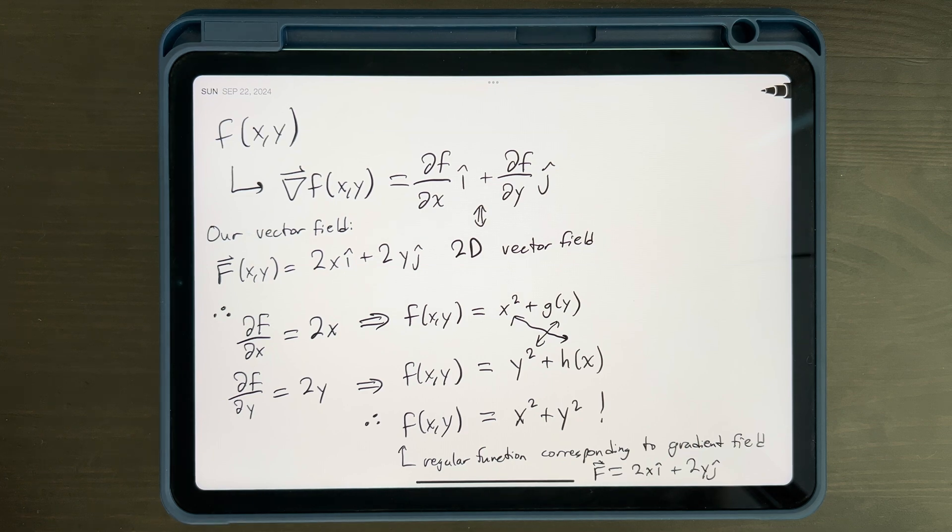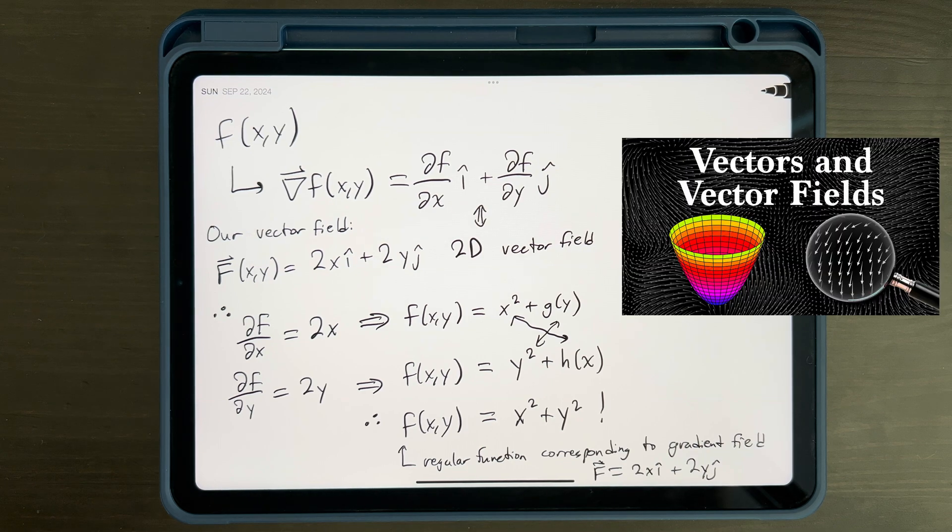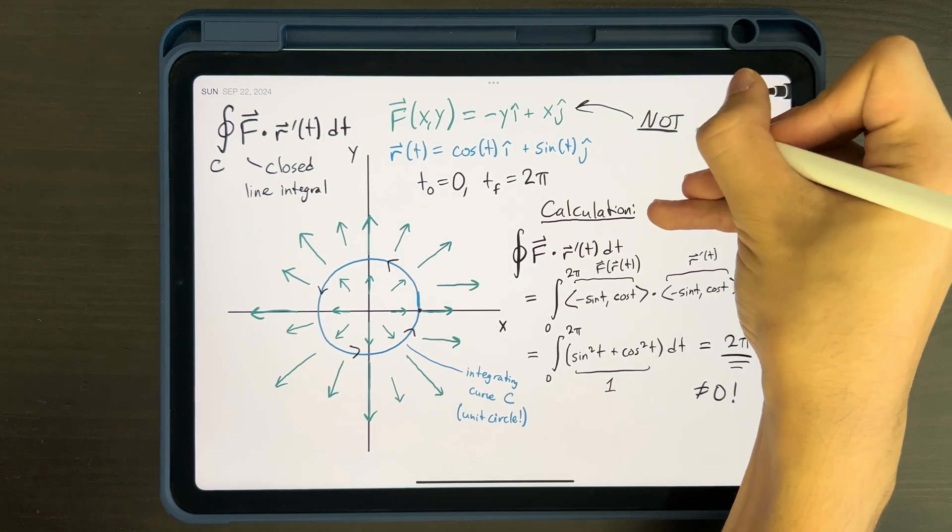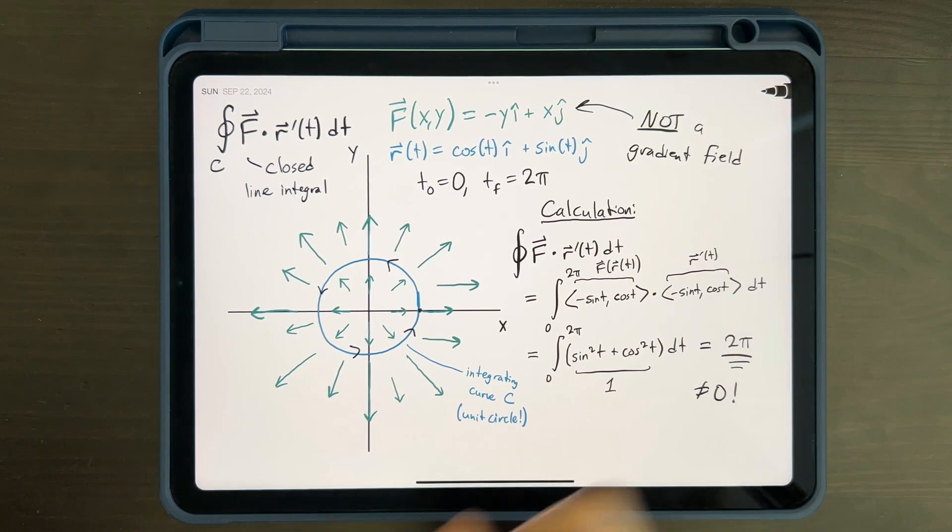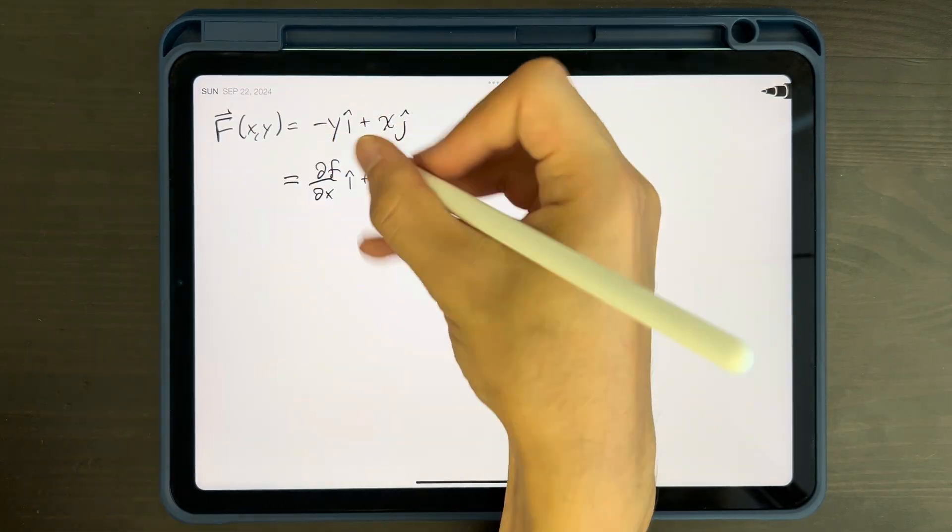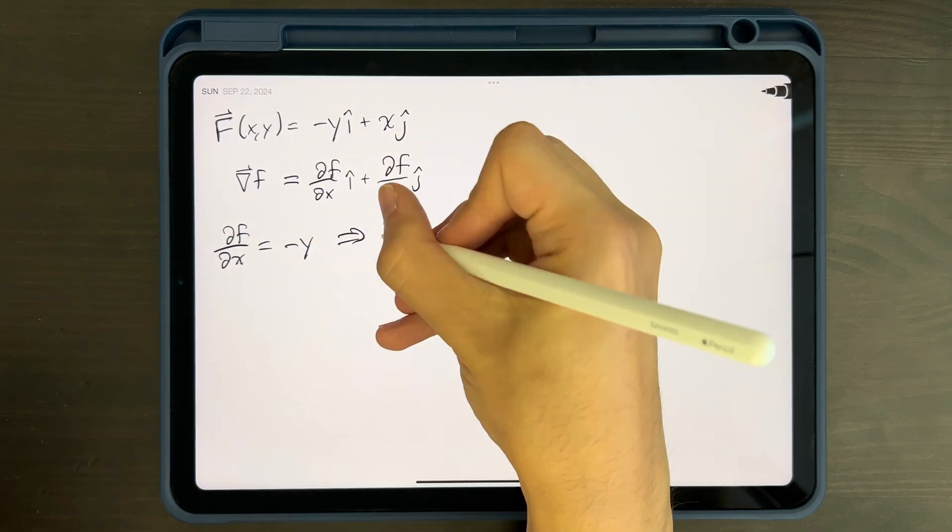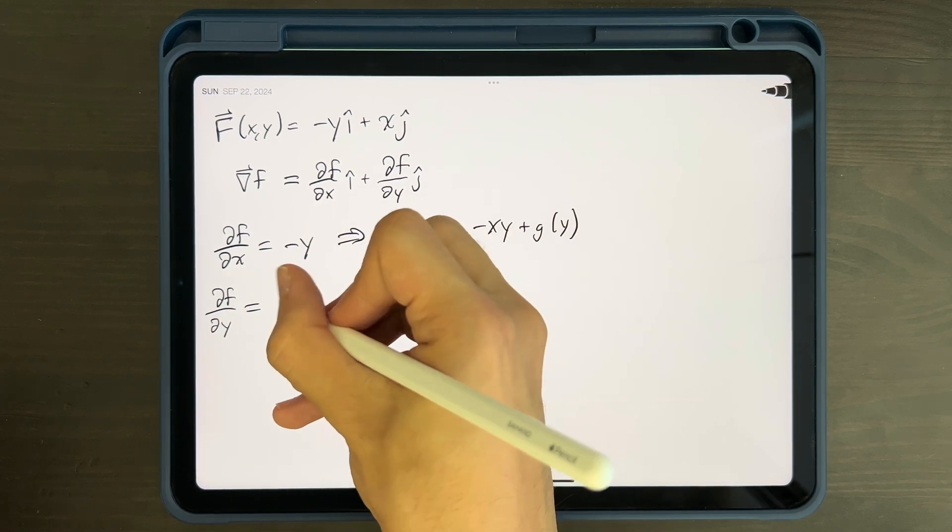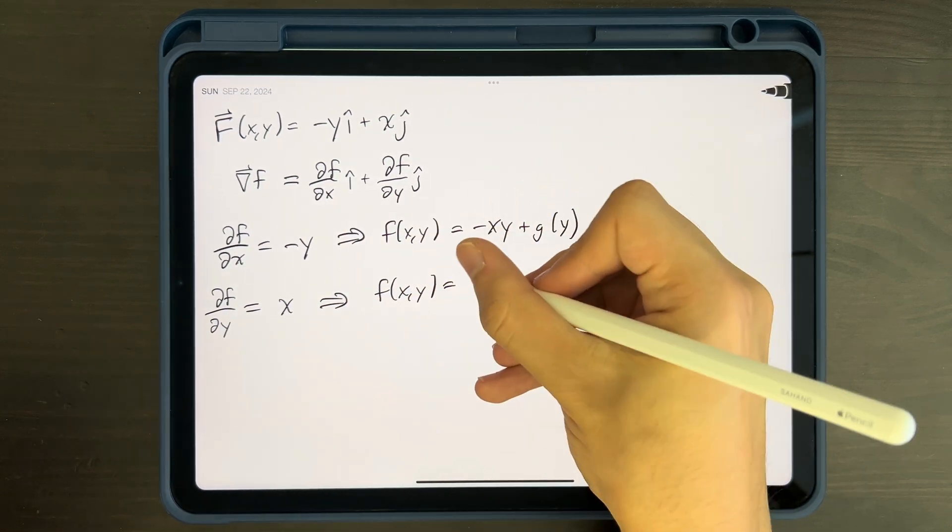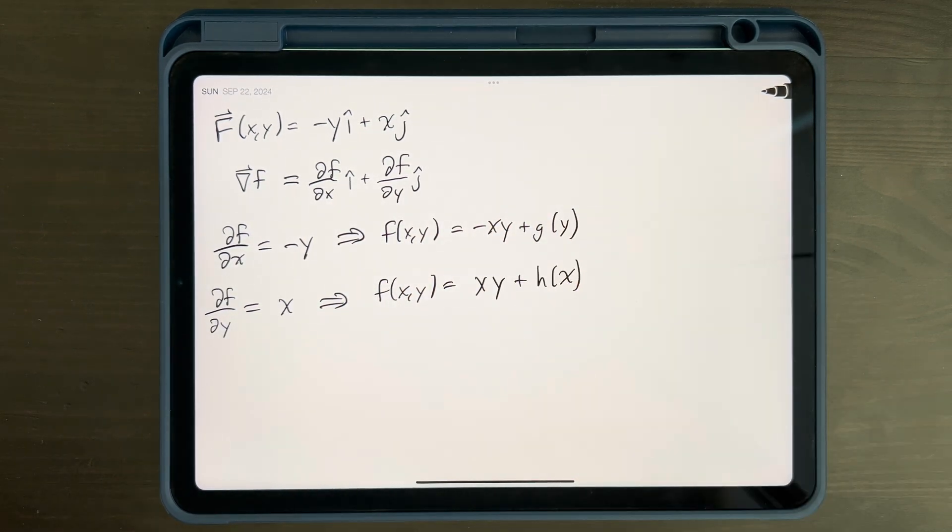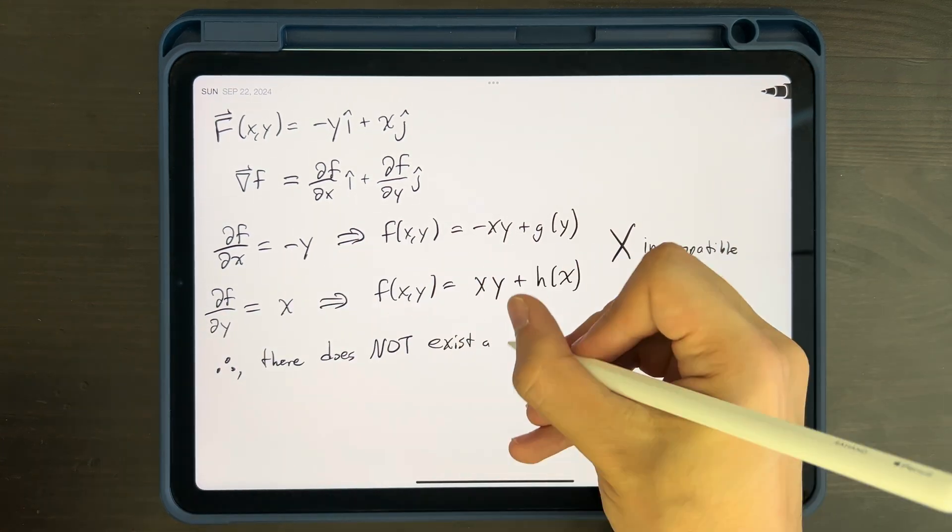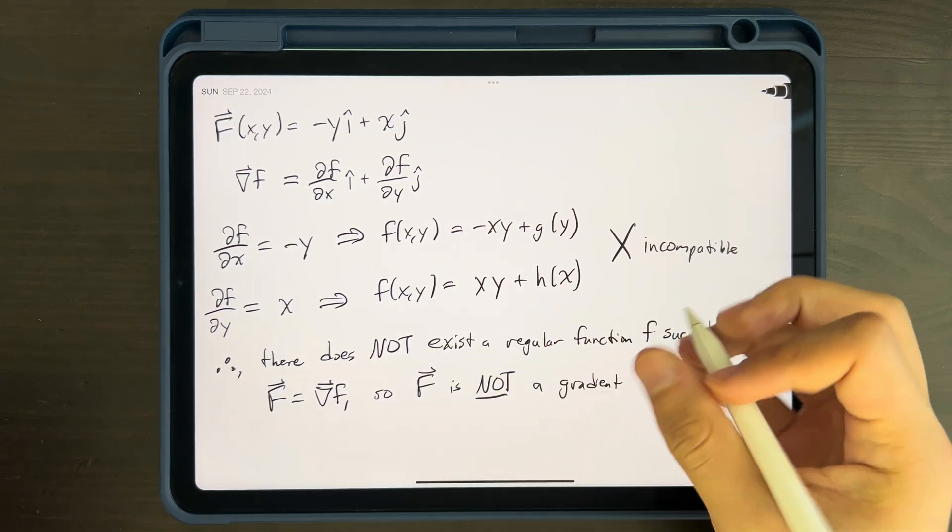In fact, it's the same example I used in one of my previous videos to introduce gradients in the first place. By contrast, the other vector field we wrote, minus y comma x, is not a gradient field, and we can see why. Its i hat component tells us that the regular function needs to be minus x times y plus some function of y, while the j hat component tells us it's positive x times y plus some function of x. There's no way to make these two functions equal to each other, meaning that the vector field is not the gradient of some other regular function.